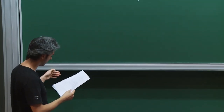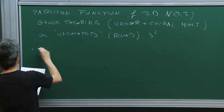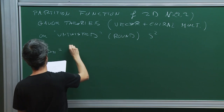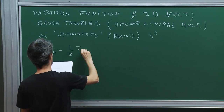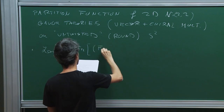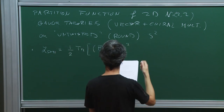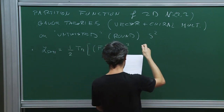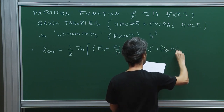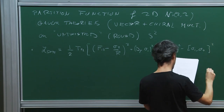Let me rewrite the bosonic part of the two actions we wrote yesterday, as this will be useful. We wrote the super Yang-Mills action. I don't write the gauge coupling because there is no dependence on that. Sigma₂ was somehow the imaginary part of sigma, but really it's complexified. Then there was this quartic interaction, which is standard.